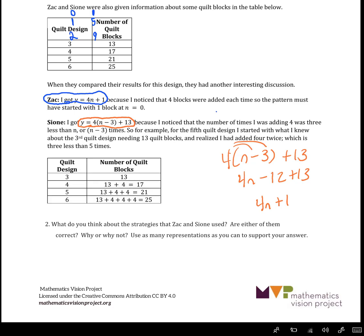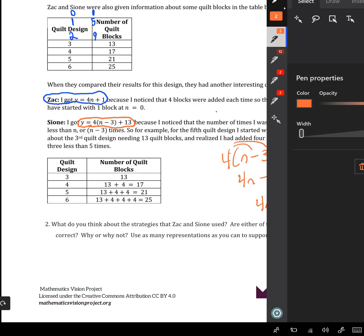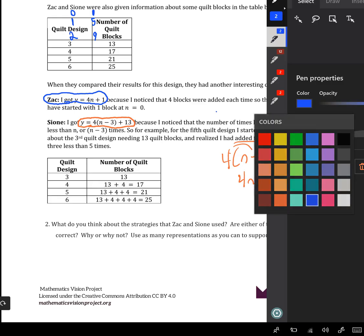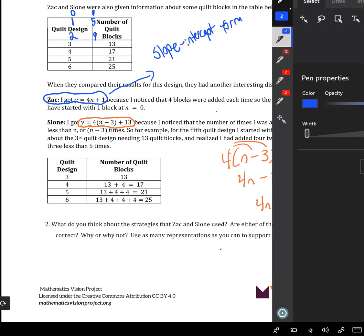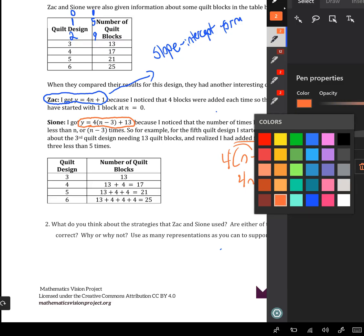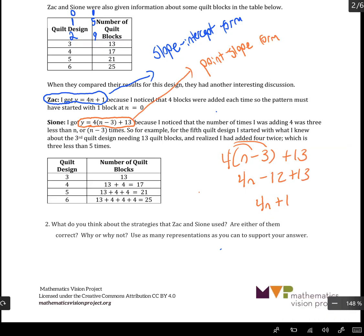So what we're going to notice is that the format that Zac is using every time is based off of the slope and what's called the y-intercept. So that's called slope-intercept form. And it requires you to work backwards to figure out what the y-intercept would be in some cases. Now the form that Sion is using is called point-slope form. And so now we want to compare the two.